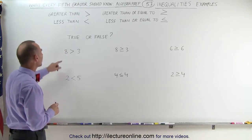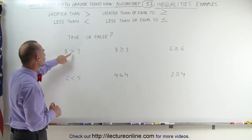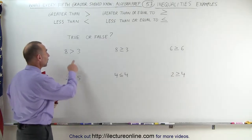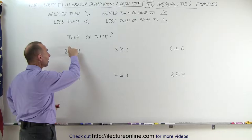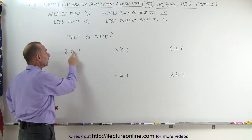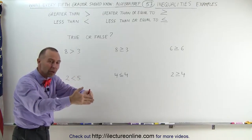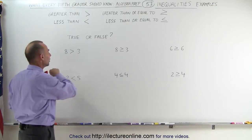For example, here we have the number 8 greater than 3 and they ask us is that true or false. We have to remember that when we see this symbol, the open side of the symbol means greater than, the pointy part of the symbol means less than, it comes together to a smaller number and it opens up to a greater number.